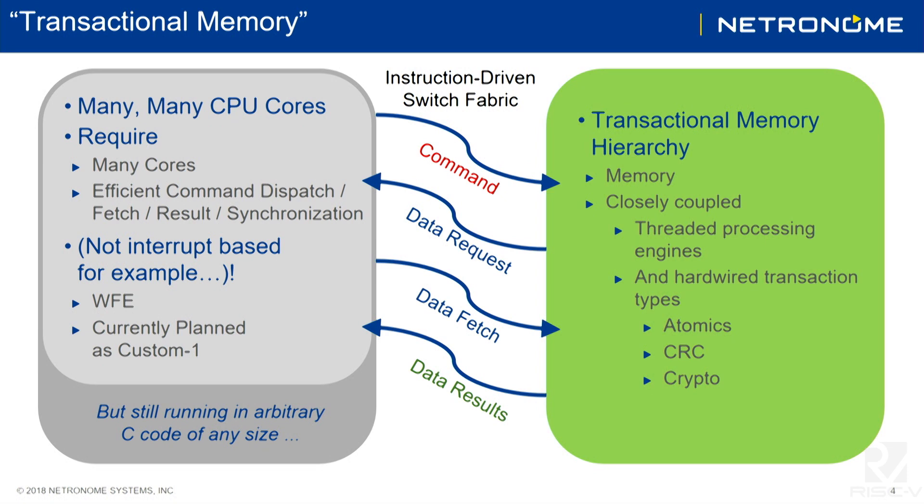There are several examples of operations that this works well with. Fire and forget — a command that you can issue to the memory that you don't want a response back. In networking, we have to keep track of statistics about the packets, the system, and other things, which require multiple semaphores or atomic operations to be performed to the memory structure. With a transactional memory, you can issue one command and multiple statistics will get updated in one shot.